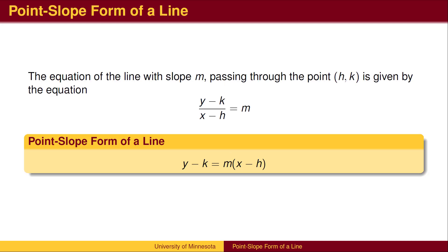In general, the point-slope equation of the line with slope m that passes through the point (h, k) is given by the equation y minus k equals m times x minus h. That is, y minus the y-coordinate equals m times x minus the x-coordinate of the point.